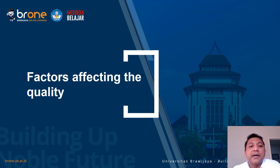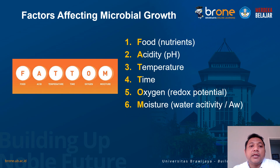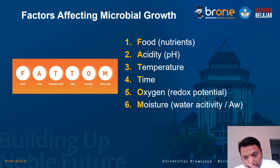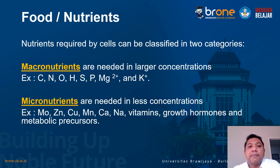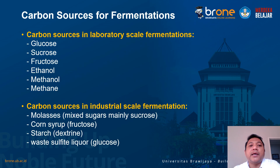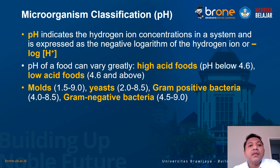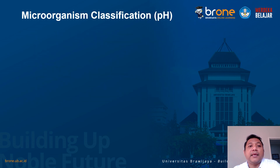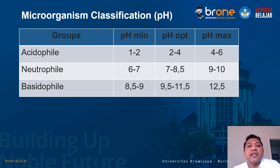Beberapa faktor yang mempengaruhi kualitas produk pangan fermentasi mudah diingat dengan akronim FATON. F-nya food atau nutrisi, A-nya acid atau keasaman/pH, T-nya temperature atau suhu, T yang kedua adalah waktu, O adalah oksigen, dan M-nya kelembaban. Nutrisinya ada makronutrien dan mikronutrien — ini harus ada untuk pertumbuhan, sama seperti manusia butuh makan. Untuk pH, ada yang suka pH rendah, ada yang suka pH netral — klasifikasinya ada acidophil, neutrophil, dan alkaliphil.